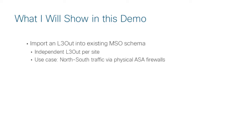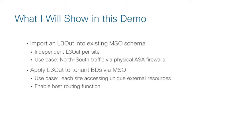This is a case where I've got an independent layer 3 out in each of my two sites and the use case I'm going to focus on here is really north-south traffic via some physical ASA firewalls. Then I'll apply that layer 3 out after I import it to our tenant BDs, set up all the contracts, and do all of that in MSO. The use case here is that each site will be accessing unique external resources only available in that site.